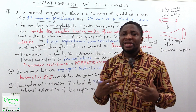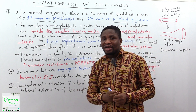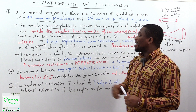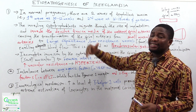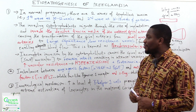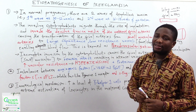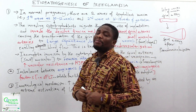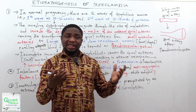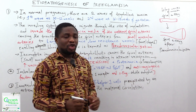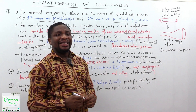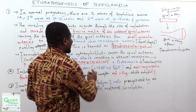But how does this culminate into the development of preeclampsia? When pseudo-vascularization does not take place — that is, in the case of incomplete invasion of the cytotrophoblasts — the maternal spiral arteries, which are small and muscular in form, remain intact.